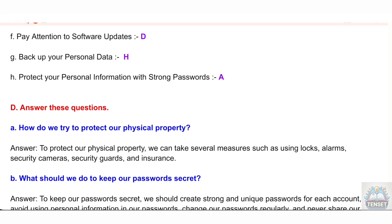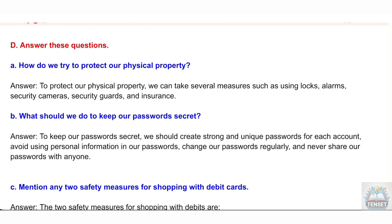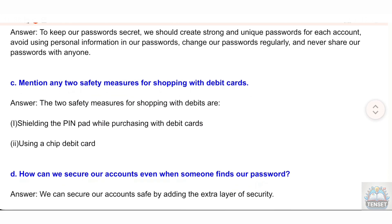Section D: Answer these questions. A: How do we try to protect our physical property? Answer: To protect our physical property, we can take several measures such as using locks, alarms, security cameras, security guards, and insurance. B: What should we do to keep our passwords secret? Answer: To keep our passwords secret, we should create strong and unique passwords for each account, avoid using personal information in our passwords, change our passwords regularly, and never share our passwords with anyone.